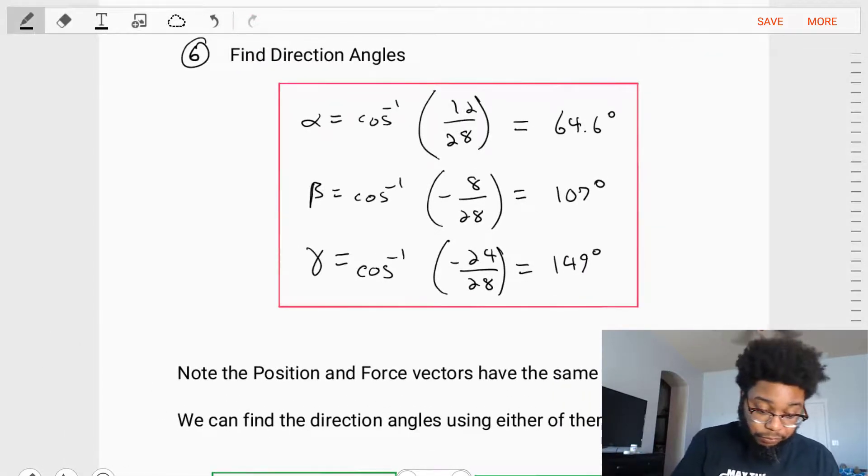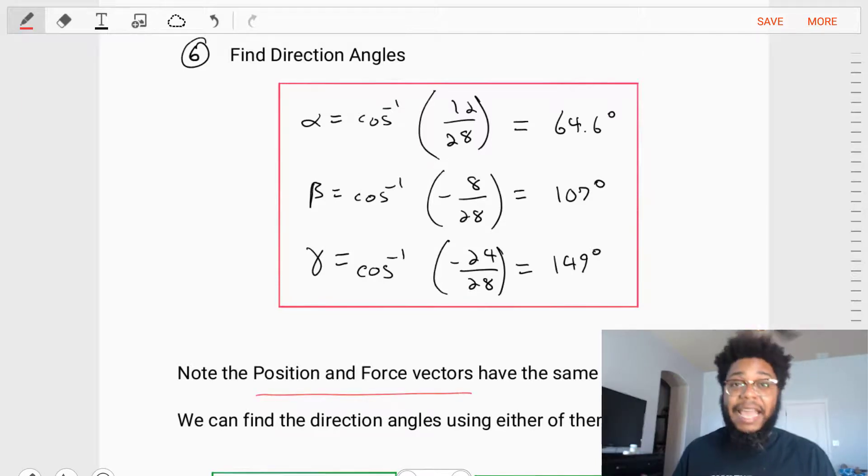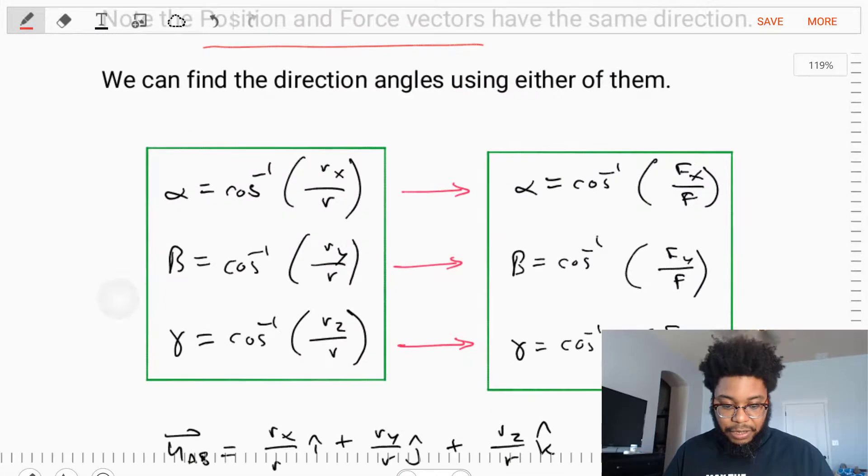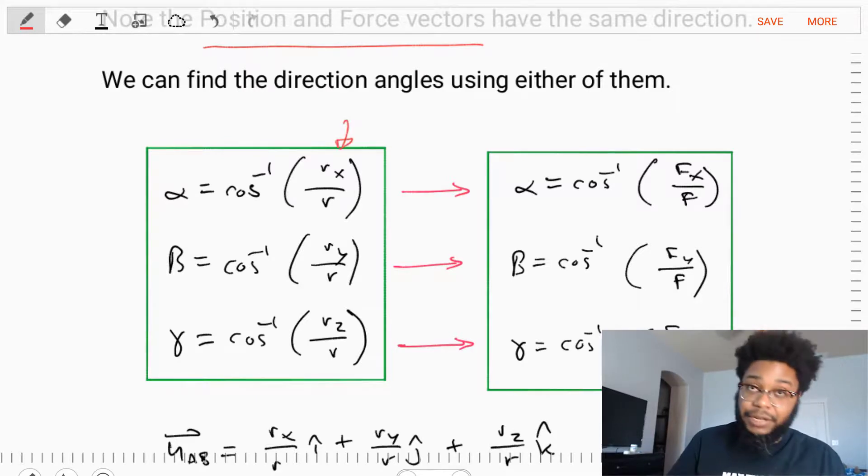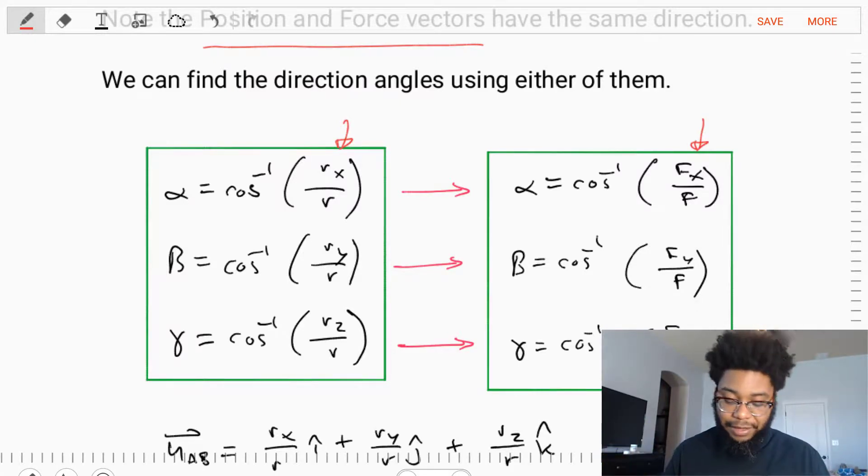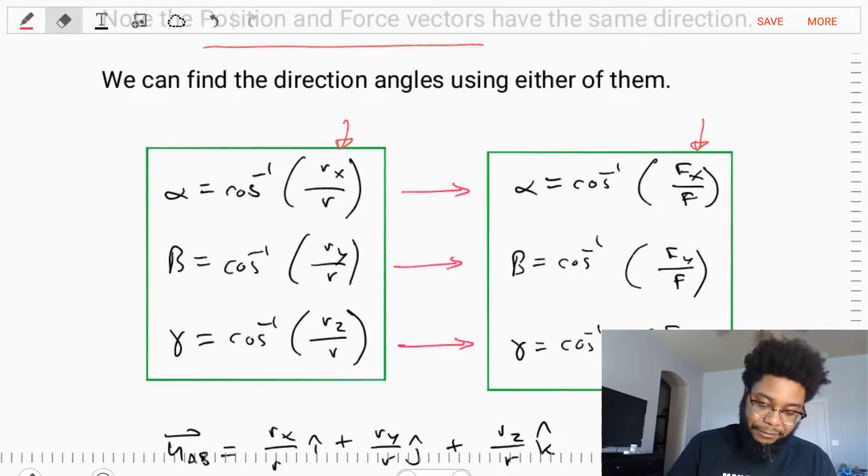So note, in this problem, that the position vector and the force vectors had the same directions. That from A to B for the position was the same direction as for the force. Force was along that line. So we can define the direction angles either as the position vector like we did, rx over r, or as the force direction vector, which would be fx over the magnitude of f. They are both going to produce the same angle at the end. This is just a little advanced stuff here.